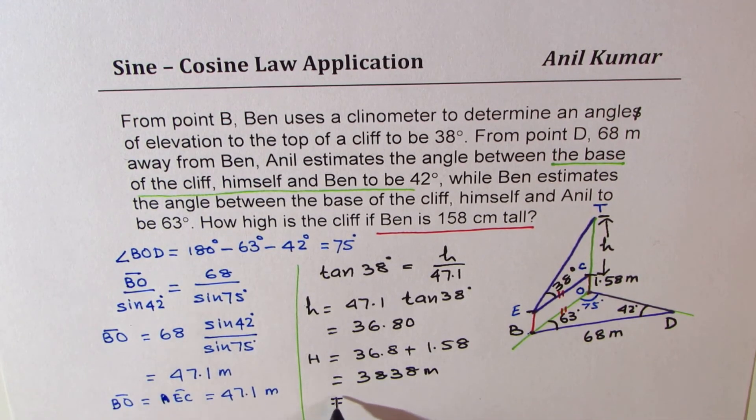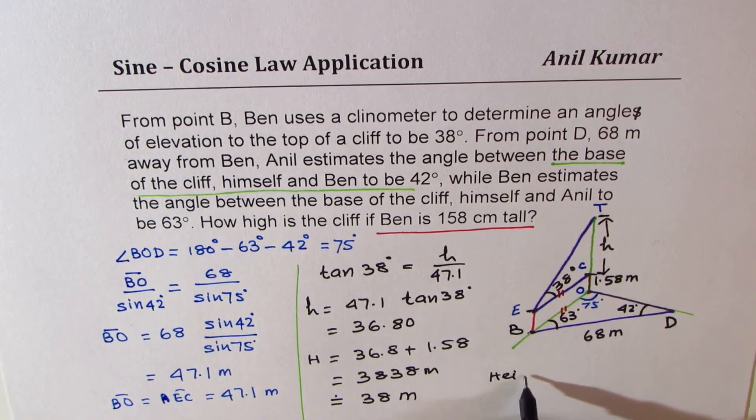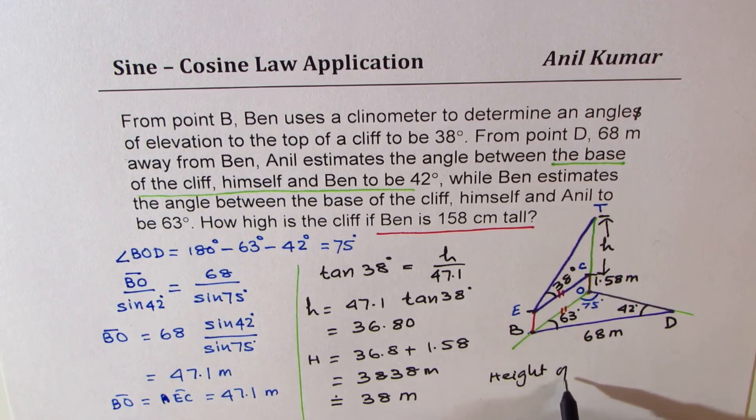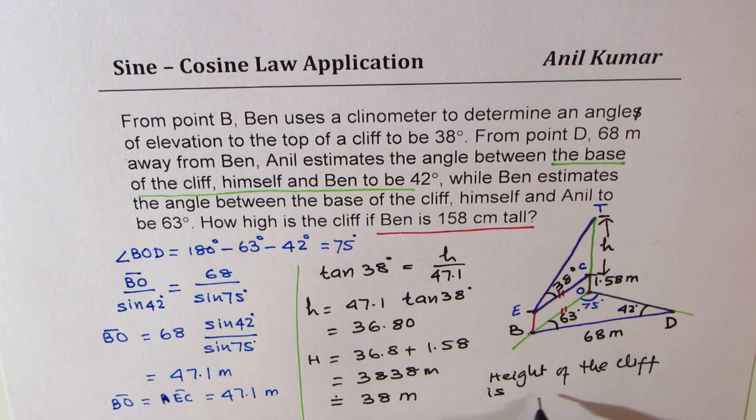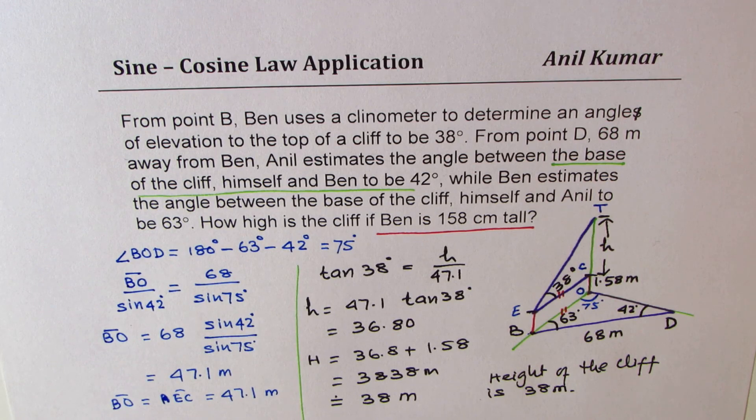We can round this to 38 meters. So that is the answer. The height of the cliff is 38 meters. I hope these steps are absolutely clear. The important thing which you need to consider is always the diagram. So if you sketch a good diagram, then it's kind of simpler to solve such questions. I hope that helps.